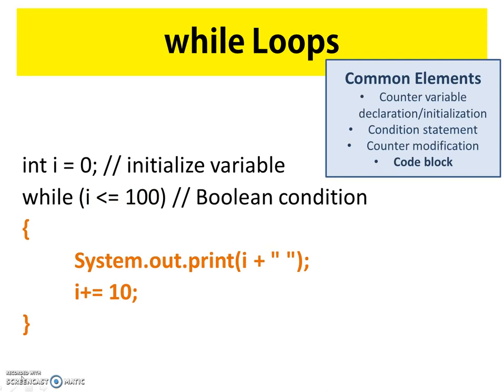Visually, the next thing we have — and this is where it differs slightly from the for loop — is our code block. Within the while code block, we have a System.out.print statement that prints the current value of i followed by a blank space. Since it's a print statement, not a println statement, there's no carriage return, so the value of i and then a space are printed.